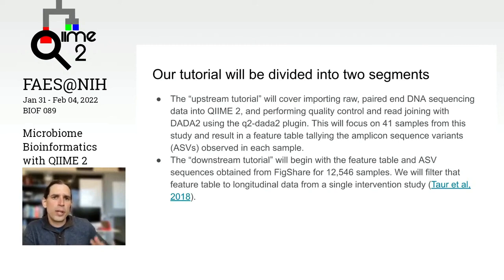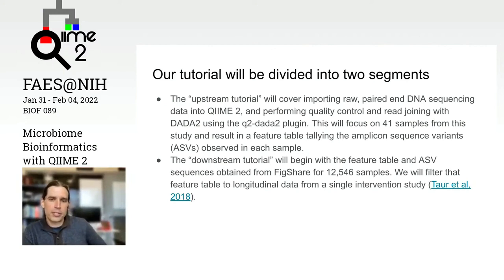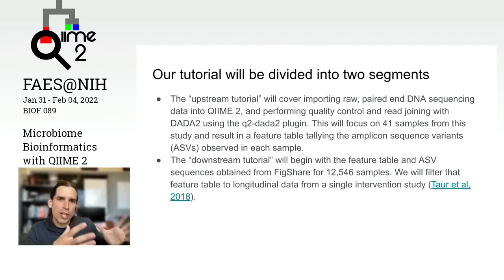We are focusing only on 41 samples for that upstream section of the tutorial because these are some of the most computationally expensive steps in a QIIME 2 analysis workflow. If we tried to run this on all 12,000 samples, this would probably run for the rest of the week on this server, maybe even longer. So we wouldn't really be able to do that on the timescale that we have for this workshop. So instead, we focus that in.